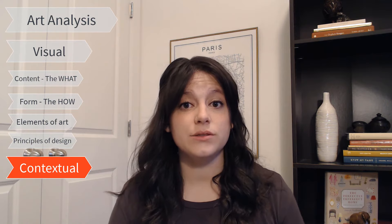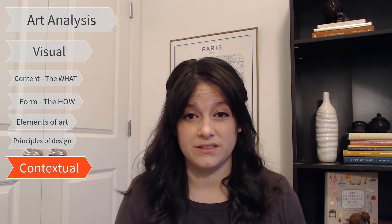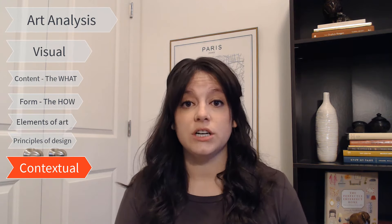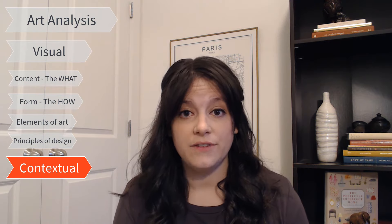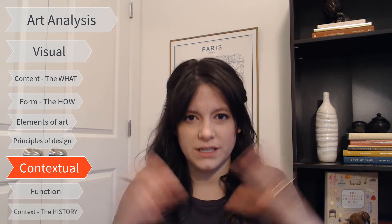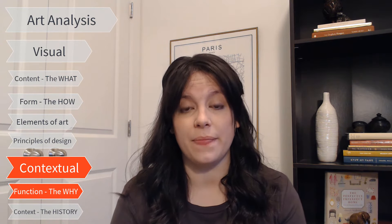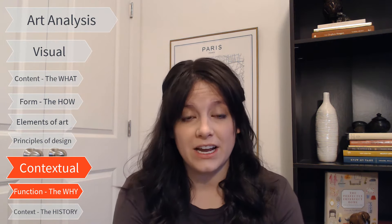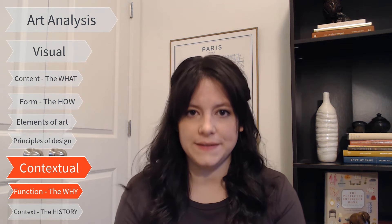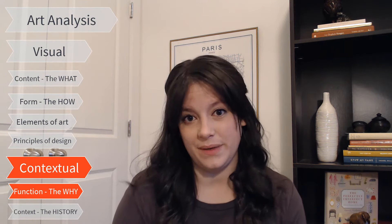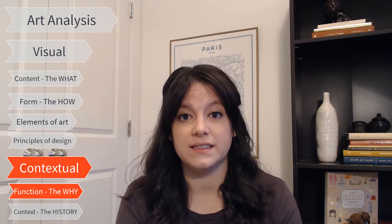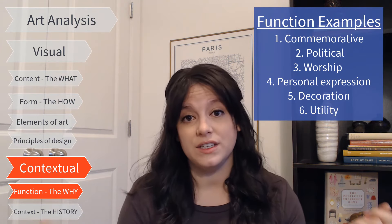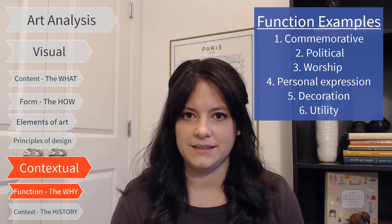Let's move on to the second branch of art analysis: contextual. This one is a little trickier and might require you to look up a few things like the history surrounding the artwork. But if you don't have time, art gives you a lot of clues into the context that can be easily accessed. There are two ways you can contextually analyze a piece: one, the function or purpose of the piece, and two, the context or historical surroundings. The function is all about figuring out the purpose of the art piece — this is one step further than the what. Once you've figured out the what, now you've got to figure out the why. What is the purpose of this piece? Some examples might be: is this commemorative, politically driven, used for worship, a personal expression, or used for decoration or utility?